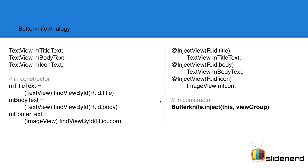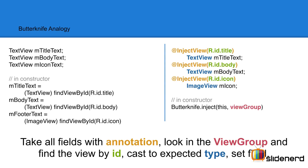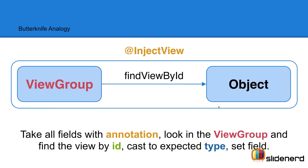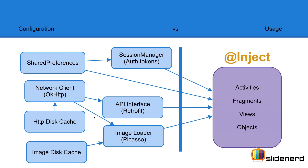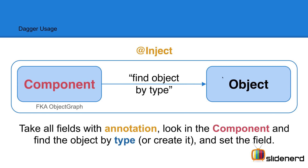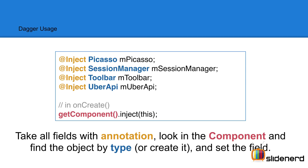If you take a look at Butterknife, this is how it works. I've taken Butterknife to show you something shortly. We use the inject view annotation on text views. The idea is simple: take all the fields with an annotation, look inside the view group, find the view by ID, cast it to the expected type, and then set the field. Find view by ID requires typecasting, which Butterknife does automatically. The idea remains similar with Dagger 2 — you use the inject annotation with objects like shared preferences or a database.